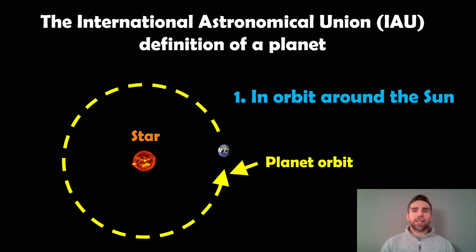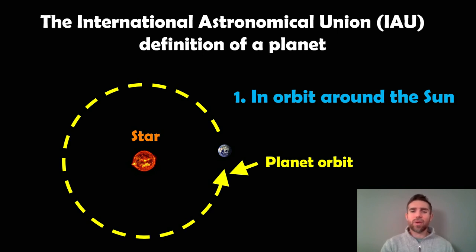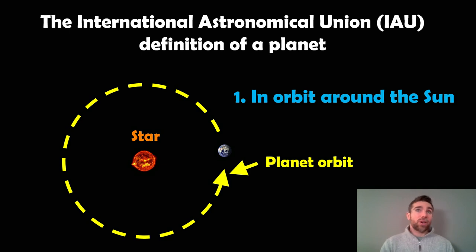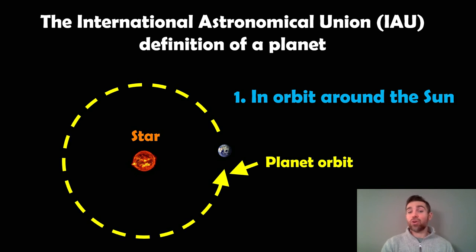A planet — this is actually the International Astronomical Union definition of a planet, and it mostly applies to planets in the solar system. There are three criteria for defining what a planet is. First, a planet orbits the sun. Now dwarf planets and asteroids also do that, so this is one of the criteria for a planet: that they orbit a sun or a star.